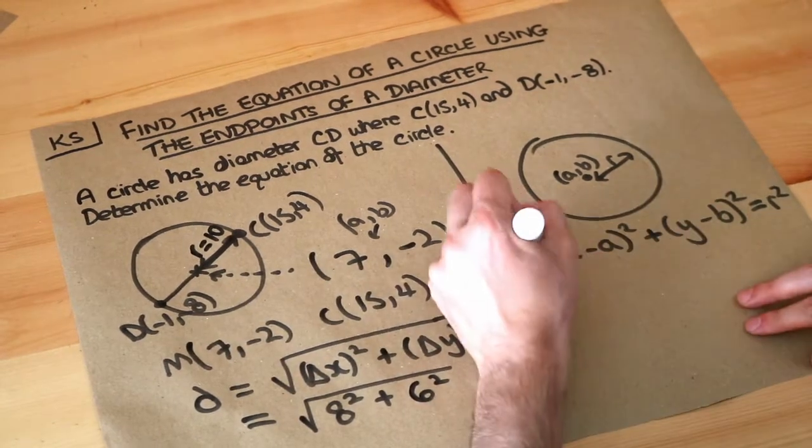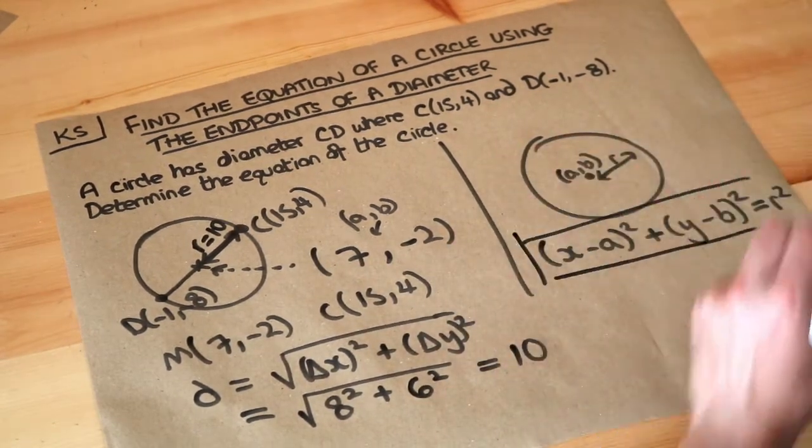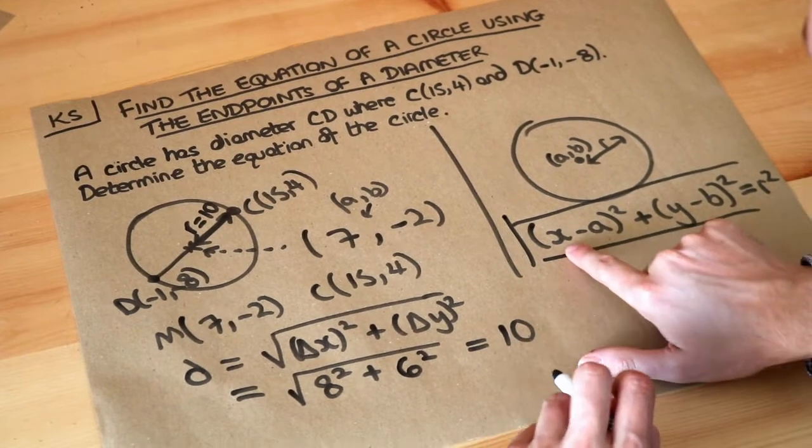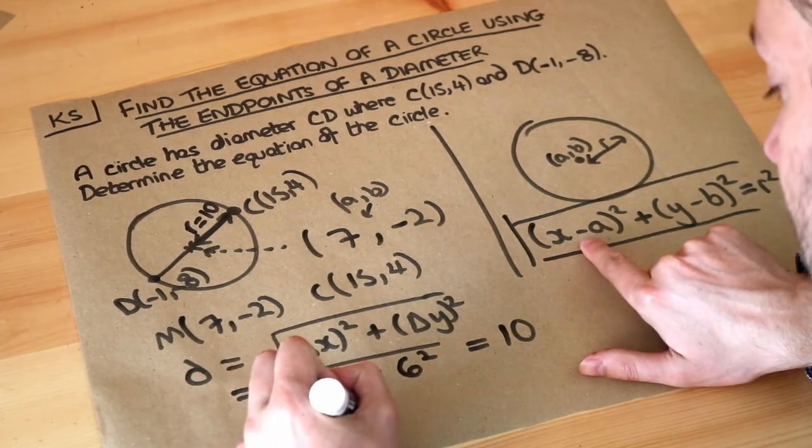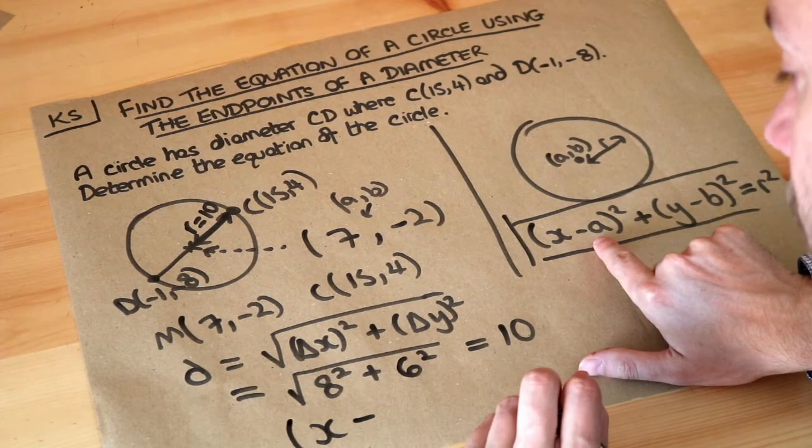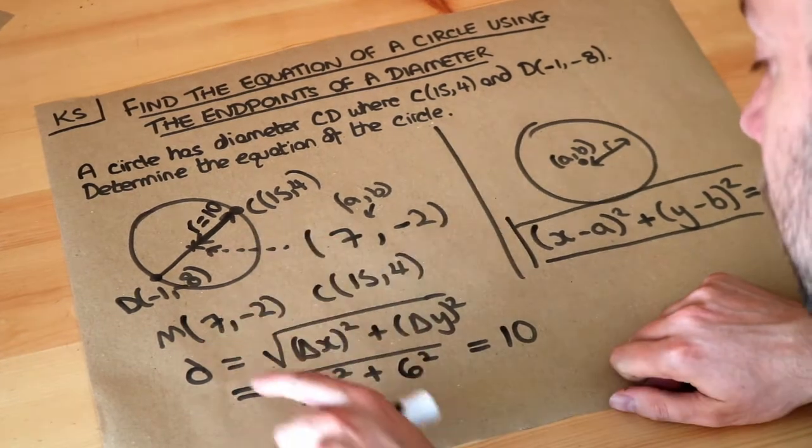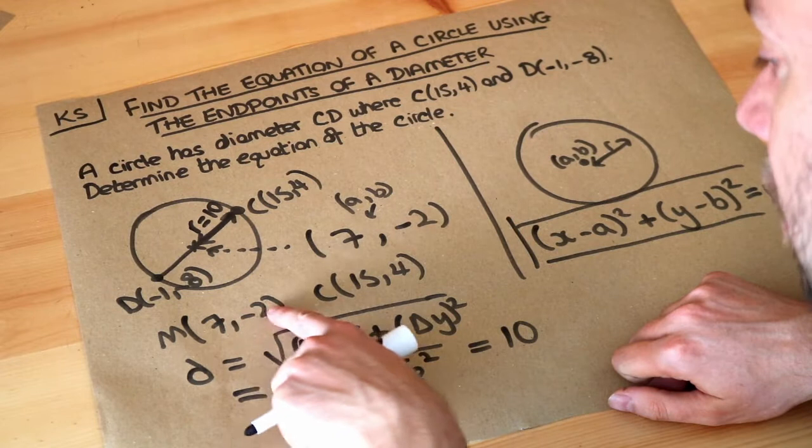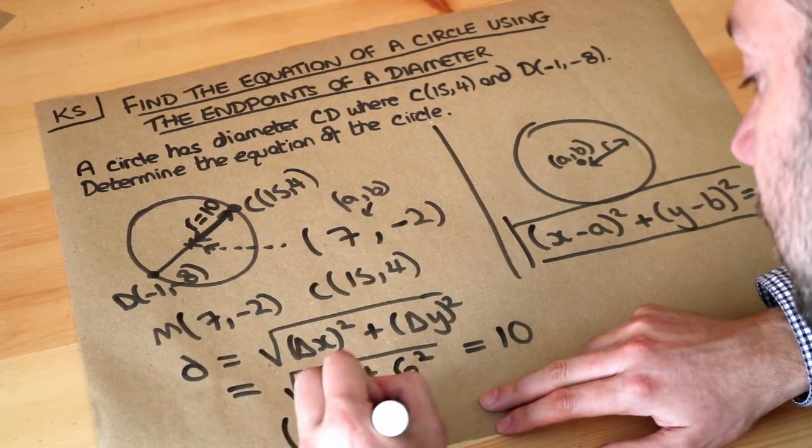So we can now apply this particular formula here. So let's use it. We've got x - a. So the a is the center of our circle. The center of our circle was (7,-2), so (x-7)²...